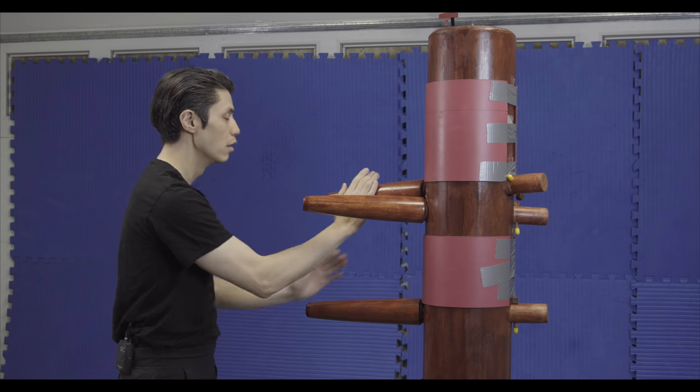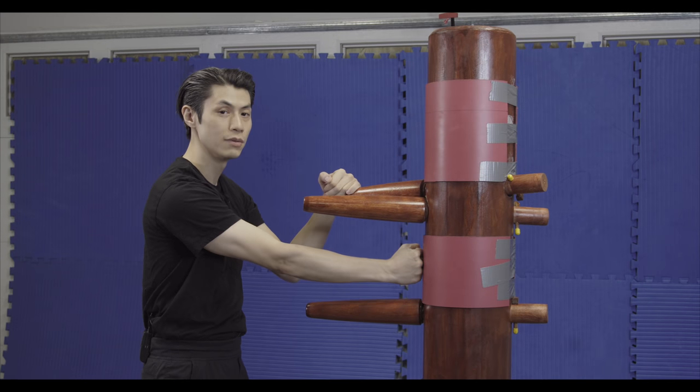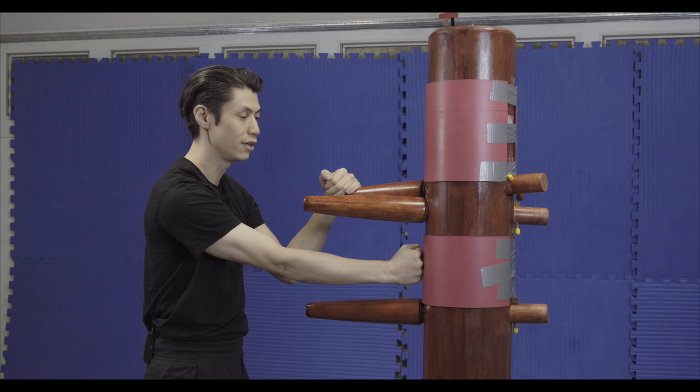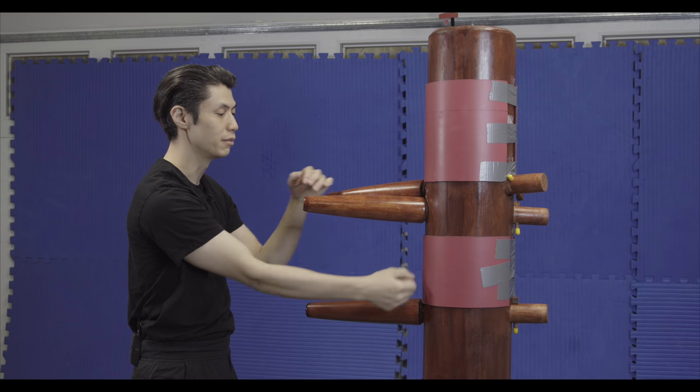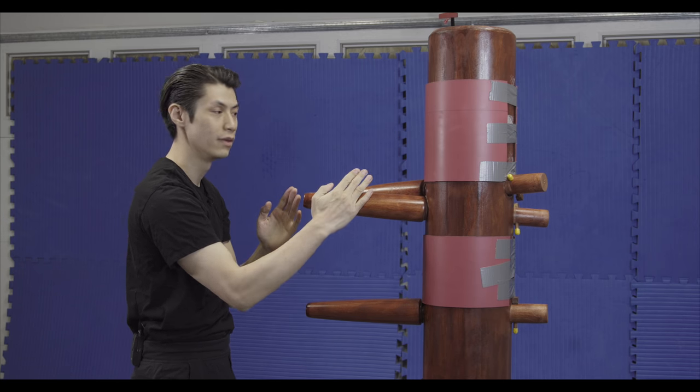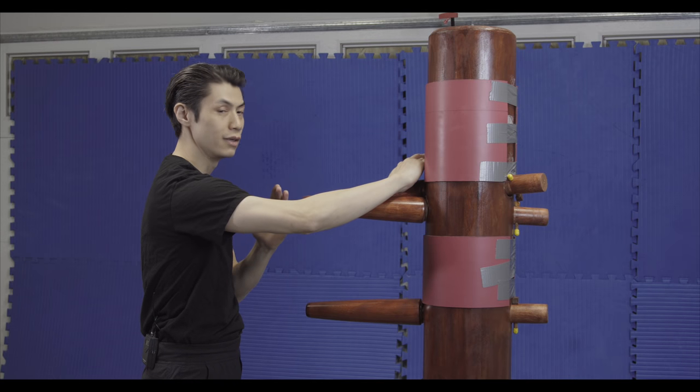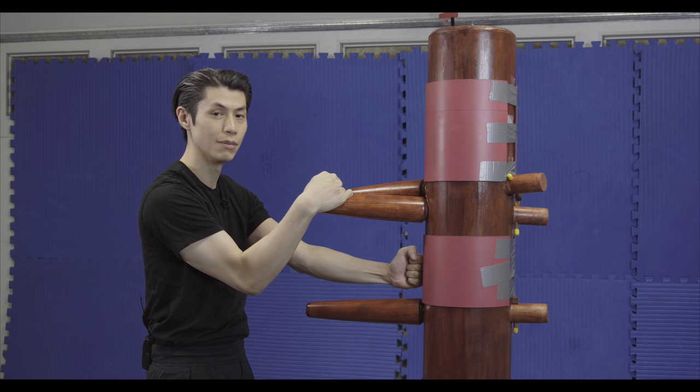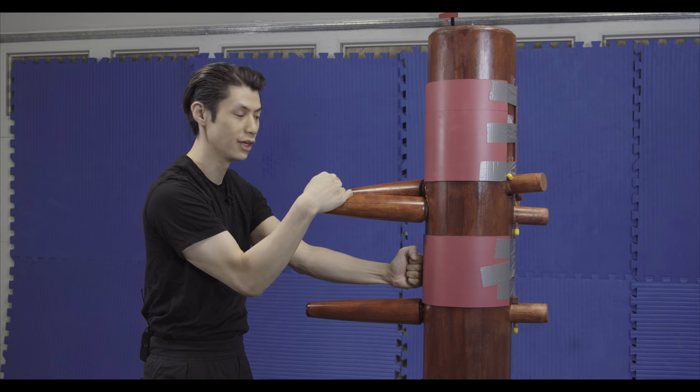And the next three moves is just doing the same thing but now starting with the right hand. So now I'm going to go pak on the outside, fook sau with the right hand, and then jut sau with the right hand and low punch. So it's the same thing as the left hand, I just switched it with the right hand.